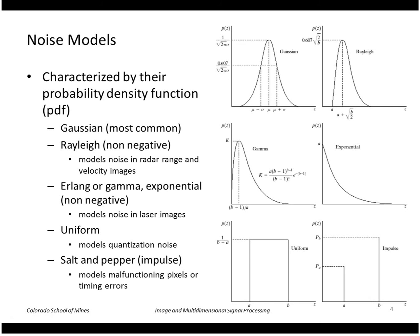Noise models can be characterized by their probability density function. The Gaussian noise model is the most common — it is mathematically easy to deal with, and it has sound justification by the central limit theorem: if you add a bunch of independent random variables together, regardless of their PDFs, the sum will converge to the PDF of a Gaussian. You can often argue that your resulting noise is a sum of independent noise sources, but there are other PDFs useful for different applications.